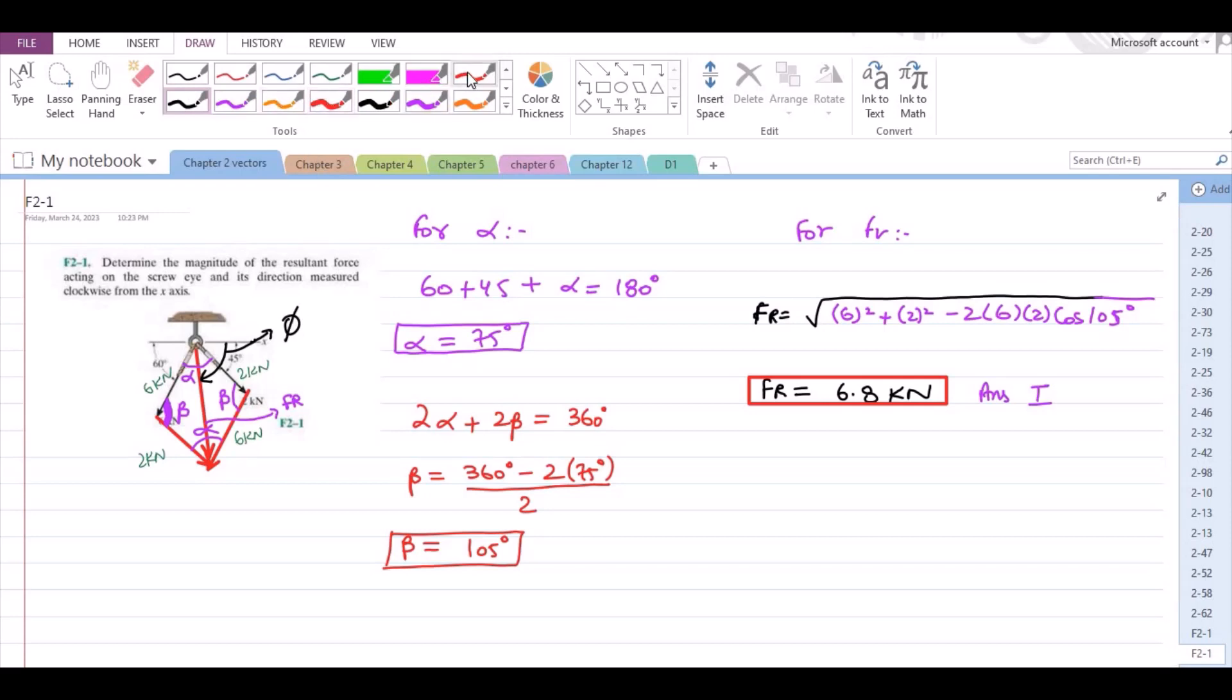Now, let us consider that this angle right here is theta. So, for phi, phi is equal to theta plus 45 degrees.